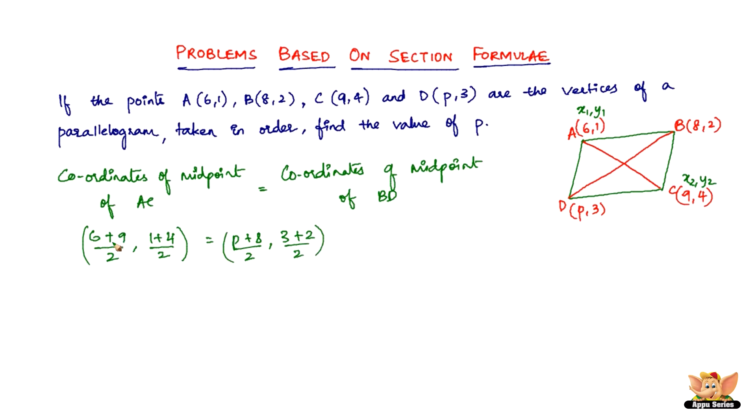So we've got 9 plus 6 is 15, 15 by 2, comma, 1 plus 4 is 5, so 5 by 2. So 15 by 2, comma, 5 by 2 equals 8 plus p divided by 2, comma, 5 divided by 2. What that means is this is equal to this, and this is equal to this. 5 by 2 is equal to 5 by 2, that's fine. So now 15 by 2 equals 8 plus p by 2, which already says that p is equal to 7.